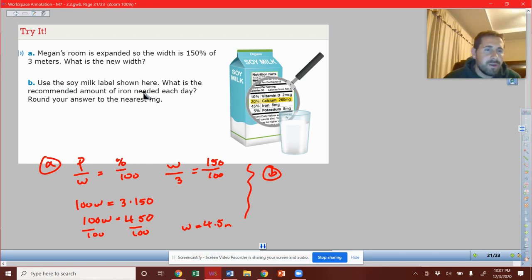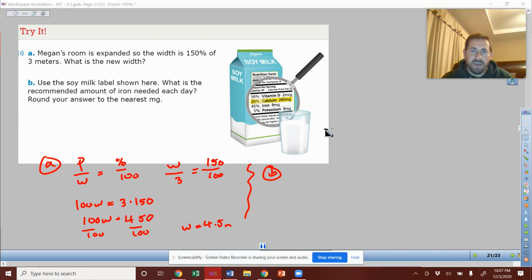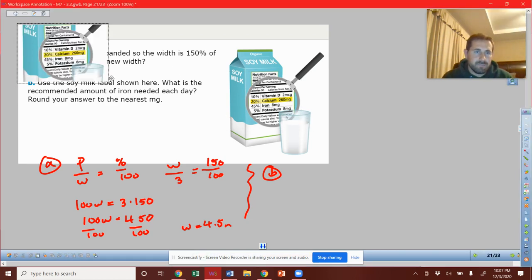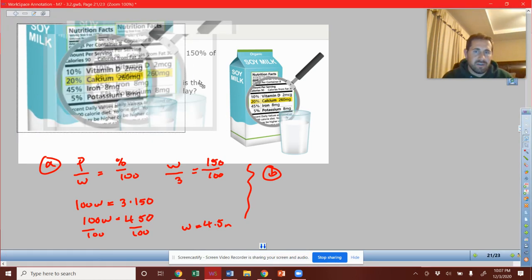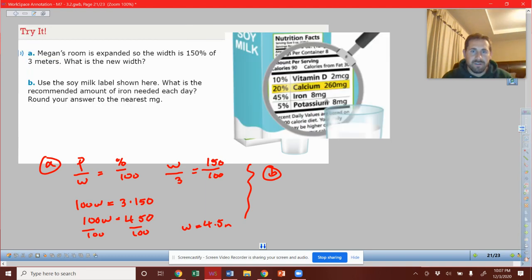Part B, use the soy milk label like we did in the previous problem. What is the recommended amount of iron needed each day? Round your answer to the nearest milligram. And I'm sorry if you couldn't read this in the previous screen. I have the ability with MOBI to enlarge it, and I apologize that that wasn't enlarged from the get-go for you.